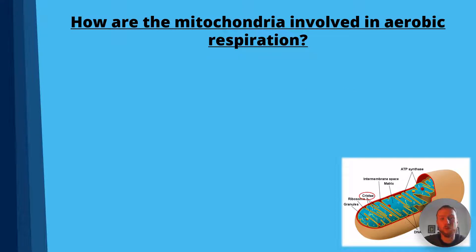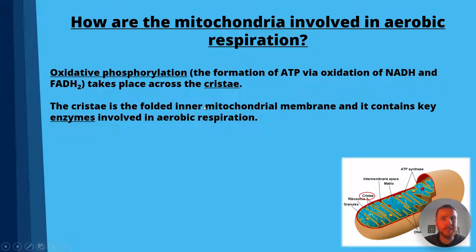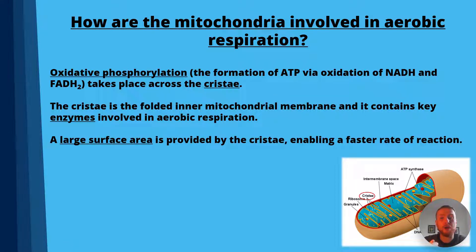Oxidative phosphorylation is the formation of ATP via the oxidation of reduced NAD and reduced FAD, and this takes place across the cristae — the folded inner mitochondrial membrane — which contains key enzymes such as ATP synthase embedded in the membrane itself. The large surface area provided by the folded inner membrane gives a fast rate of reaction for respiration and ATP production.